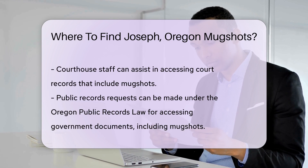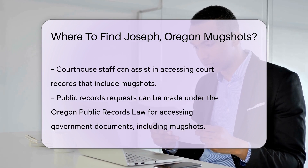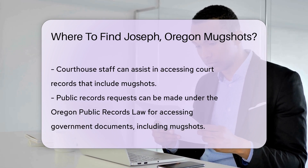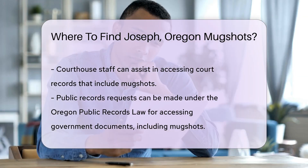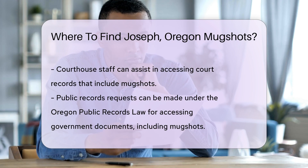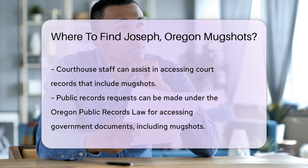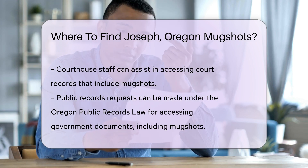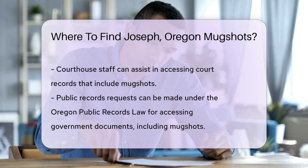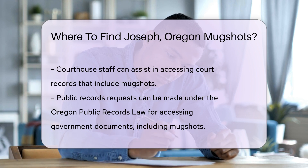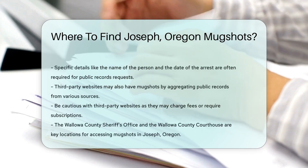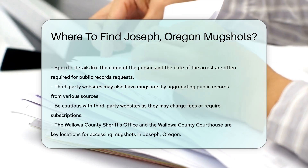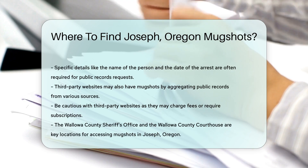Public records requests can also be made under the Oregon Public Records Law. This law allows you to request access to government documents, including mugshots. Be prepared to provide specific details, such as the name of the person and the date of the arrest.